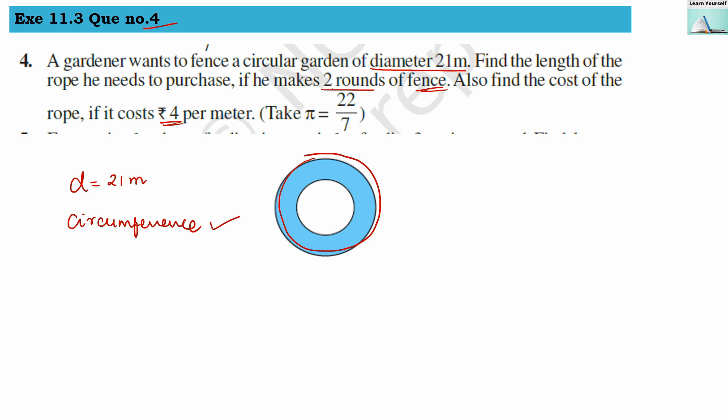For circumference, the formula is 2πr. We require radius, whereas they have given us diameter. So we have to find out radius from the diameter. Now diameter equals 2 times radius, so from this formula we can find out the radius.